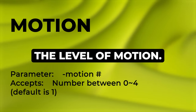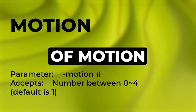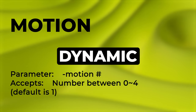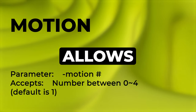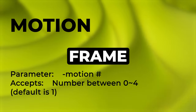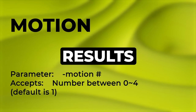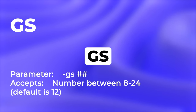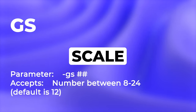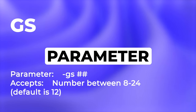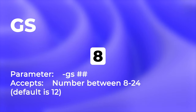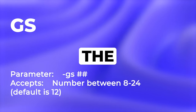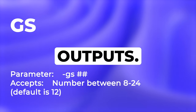In Pika Labs AI you can easily control the level of motion using the motion parameter. It offers values from 0 for static scenes to 4 for a dynamic and energetic feel, allowing you to shape your video's narrative. Experience has shown that motion 2 provides the best results. The GS parameter controls the guidance scale — higher numbers make the output more related to the input text. It accepts values typically between 8 and 24, with 12 as the default.